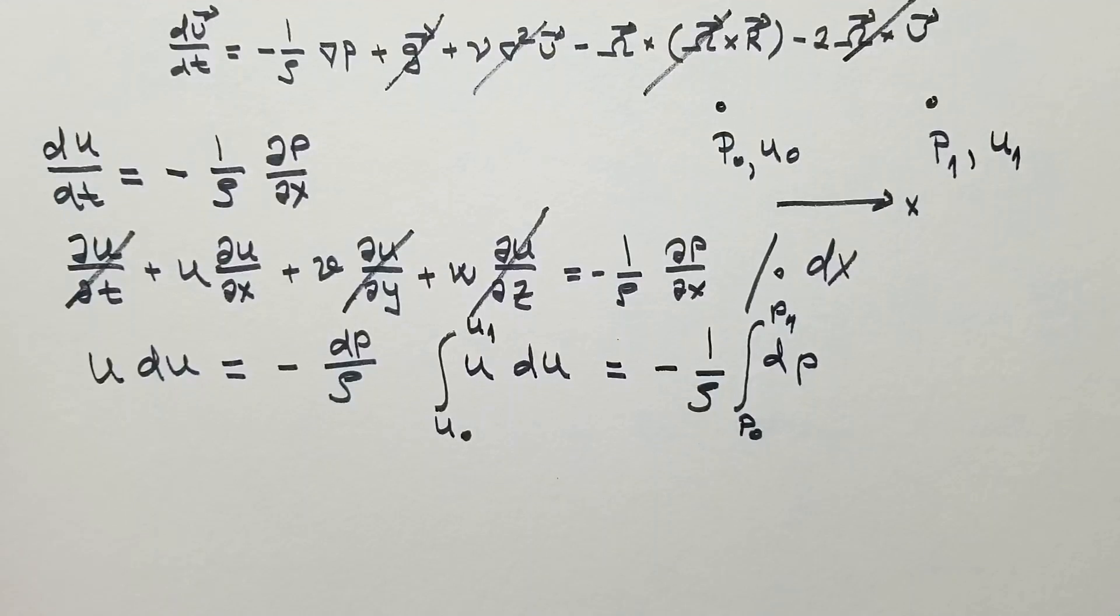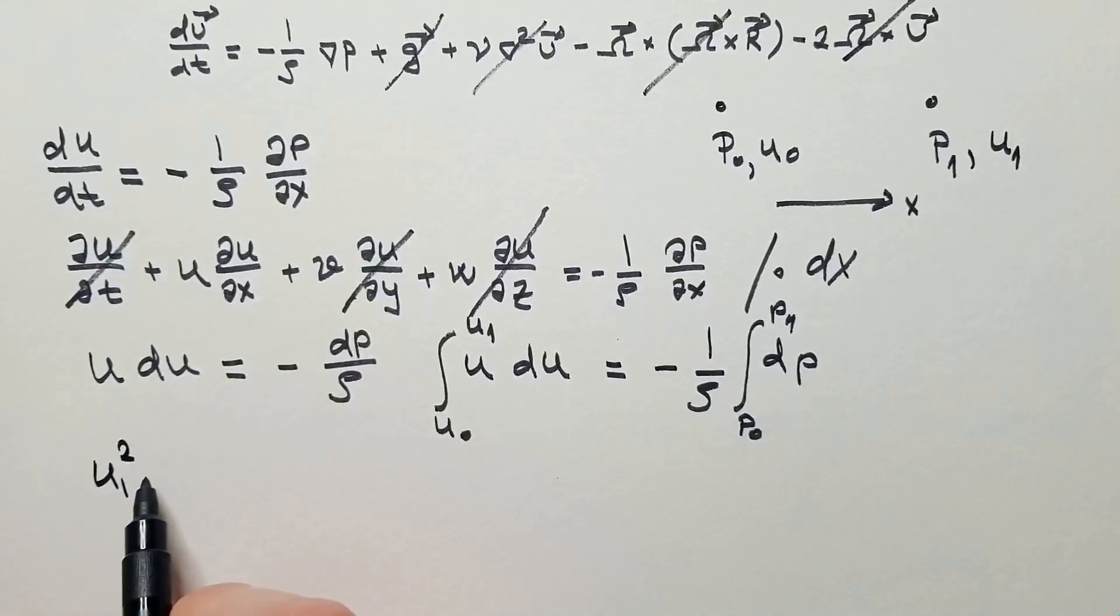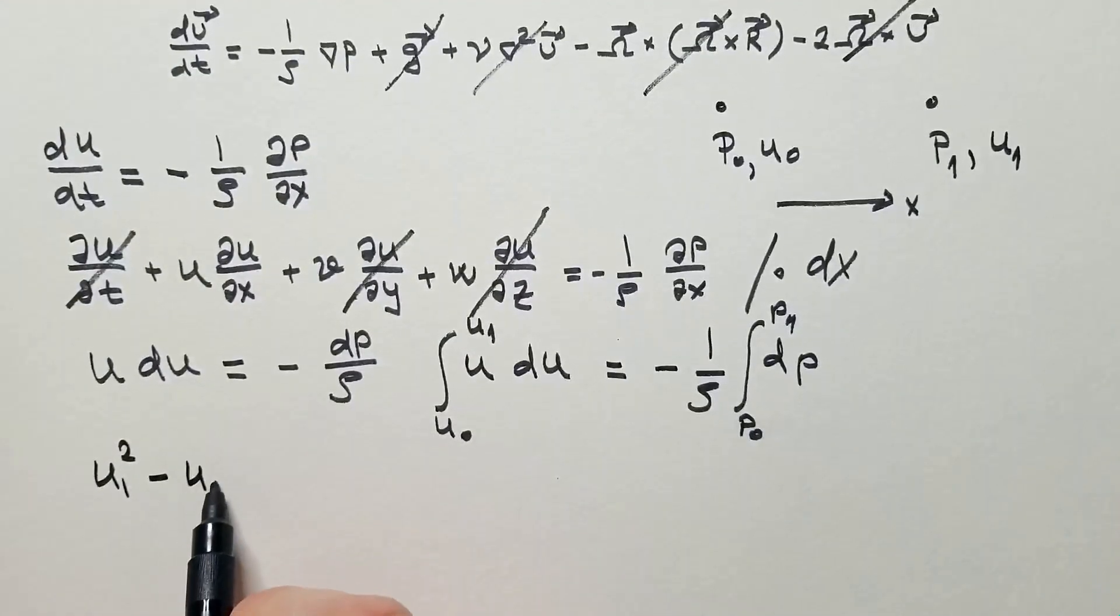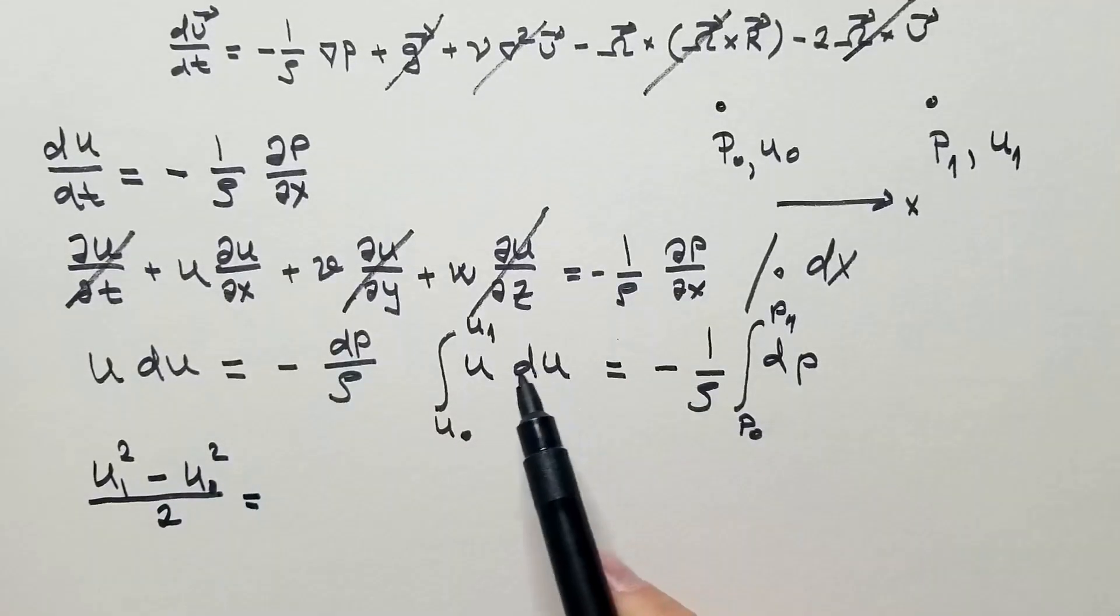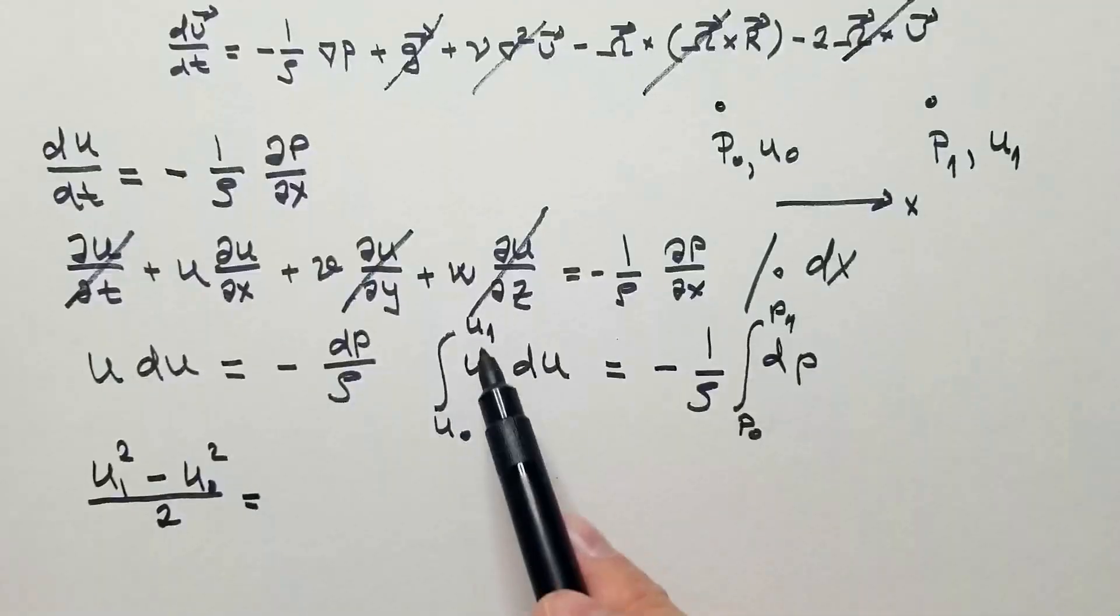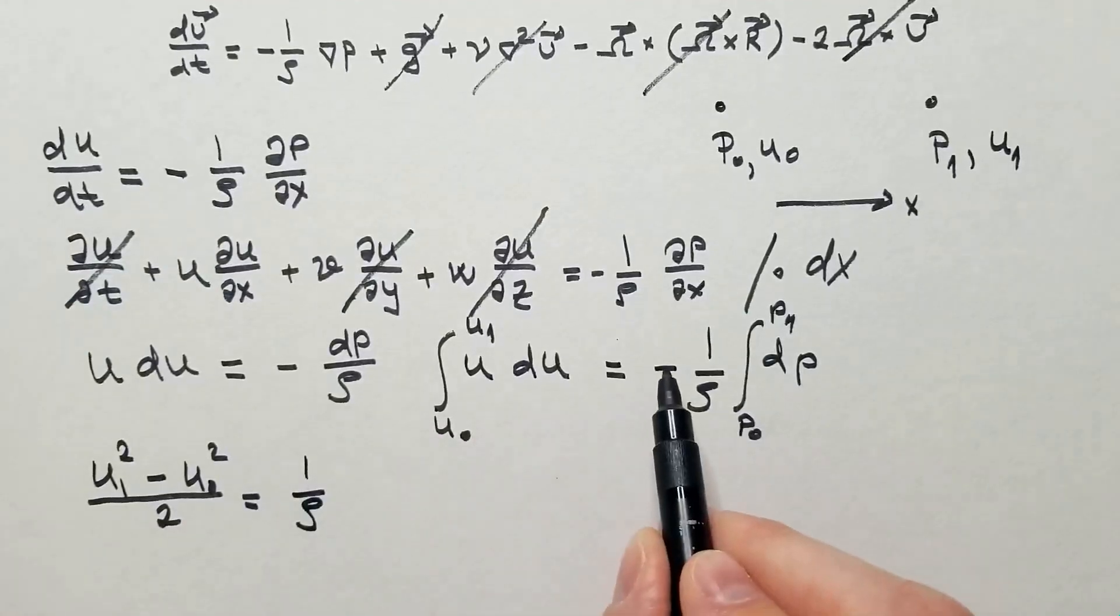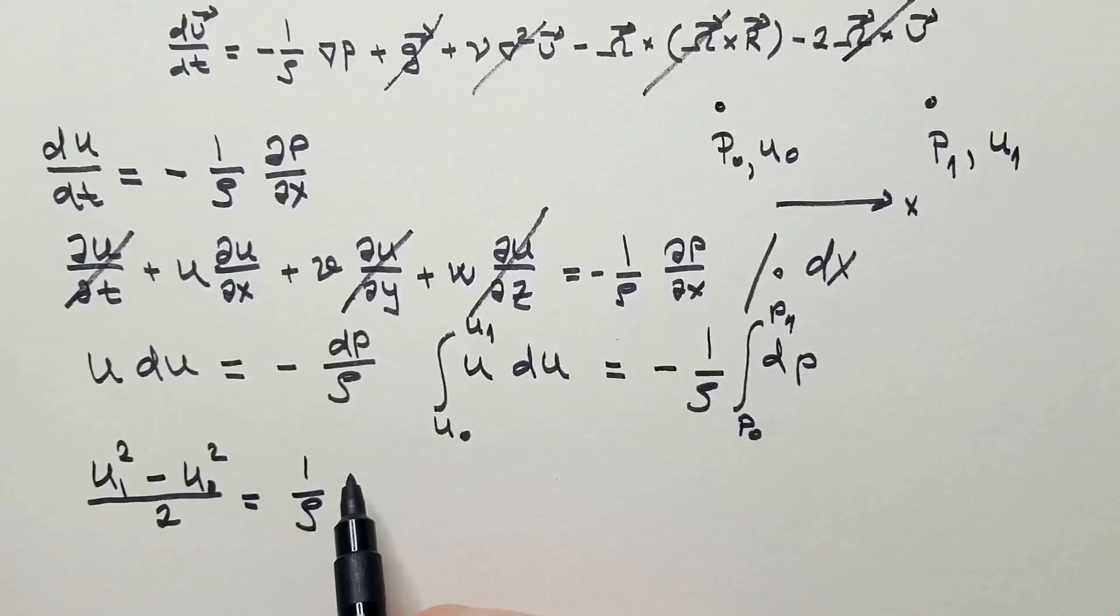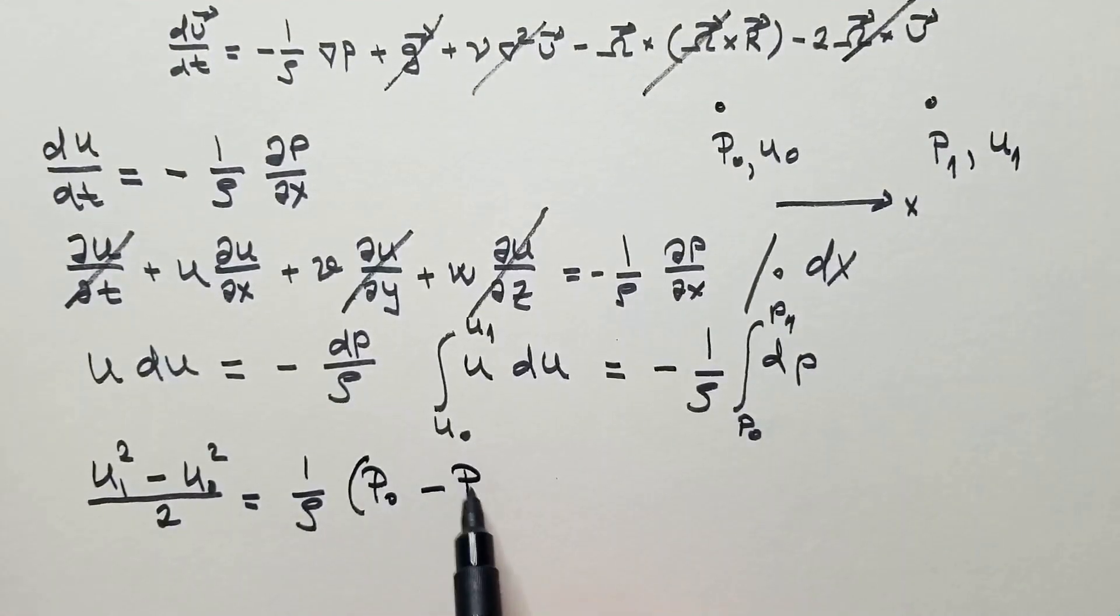I hope you know how to solve this integral. The solution is, of course, u1 squared minus u0 squared over 2, so I immediately solved the integral and inserted limits, u1 squared over 2, so p0 over rho. I will remove this minus, but I will switch the order of integral limits, so p0 minus p1.